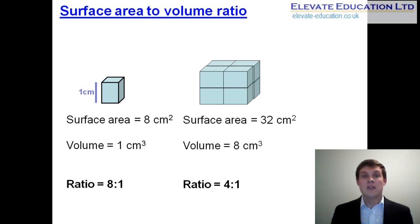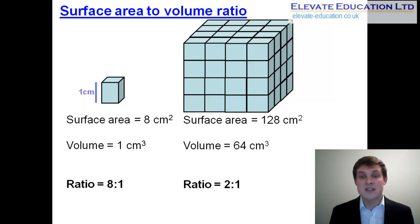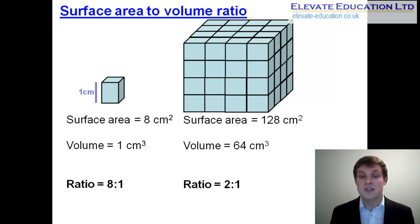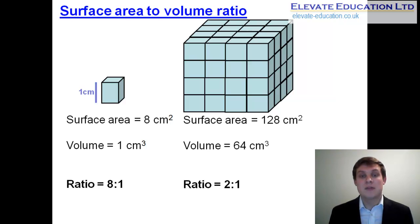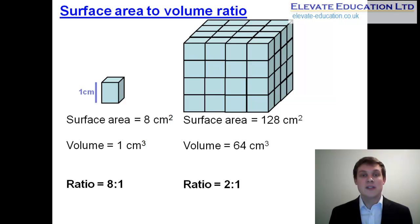If we consider an even larger organism made of 64 cells, the surface area increases to 128 centimetres squared and the volume increases to 64 centimetres cubed. However, the surface area to volume ratio continues to decrease as more and more faces of the cell become unexposed to the environment, giving a ratio of two to one. So just by increasing the number of cells in our organism, we have reduced the available surface area over which they can exchange with their environment.